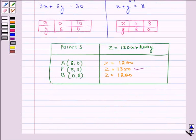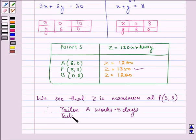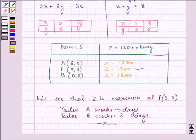Therefore, Taylor A works 5 days and Taylor B works 3 days. Right? So, this ends the session. Hope you understood the whole concept of this linear programming problem. Well, and have a nice day. Bye.